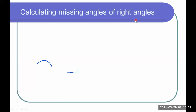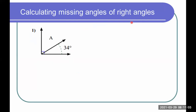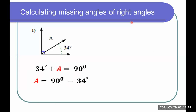Now let's try to practice. Let's say we have angle A and 34 degrees forming 90 degrees. How can we find the measure of angle A? You can pause this video and try to practice this. Basically, we start by writing 34 plus A equals 90, and then we subtract 90 minus 34 — we get 56 degrees.